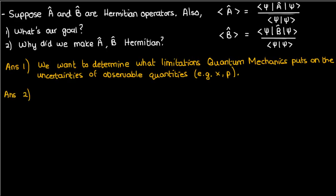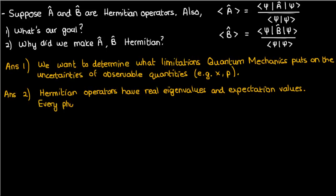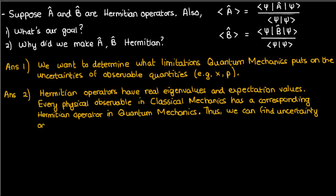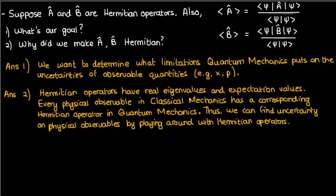Which leads to the second question: why use Hermitian operators? As mentioned in the previous video, Hermitian operators have real eigenvalues and expectation values. This is the basis of the second postulate of quantum mechanics, which states that every physical observable has a corresponding Hermitian operator in quantum mechanics. As a result, we can find the uncertainty on those observables by working with Hermitian operators, and their uncertainties have clear physical significance since their expectation values are real.